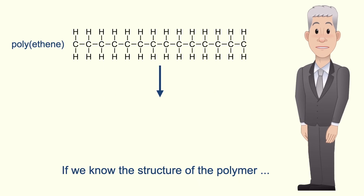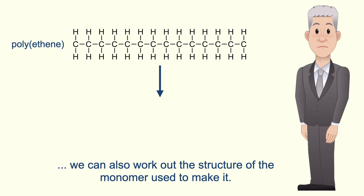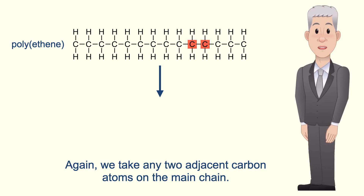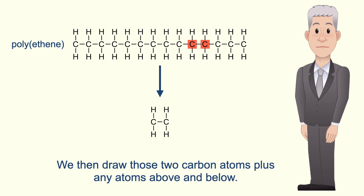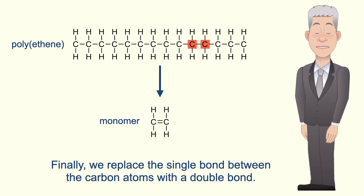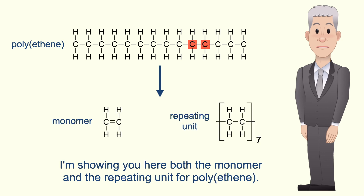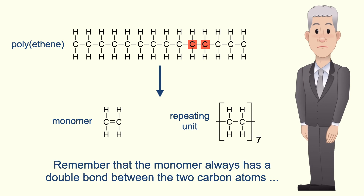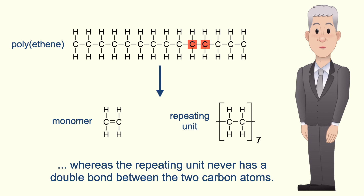If we know the structure of the polymer, we can also work out the structure of the monomer used to make it. Again we take any two adjacent carbon atoms on the main chain, then draw those two carbon atoms plus any atoms above and below. Finally we replace the single bond between the carbon atoms with a double bond. Remember that the monomer always has a double bond between the two carbon atoms, whereas the repeating unit never has a double bond between the two carbon atoms.